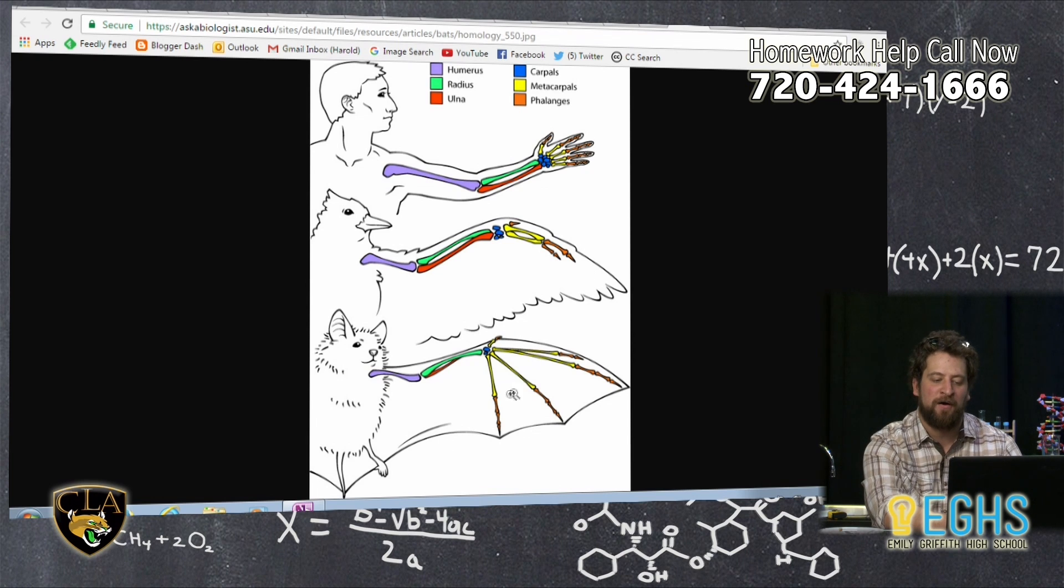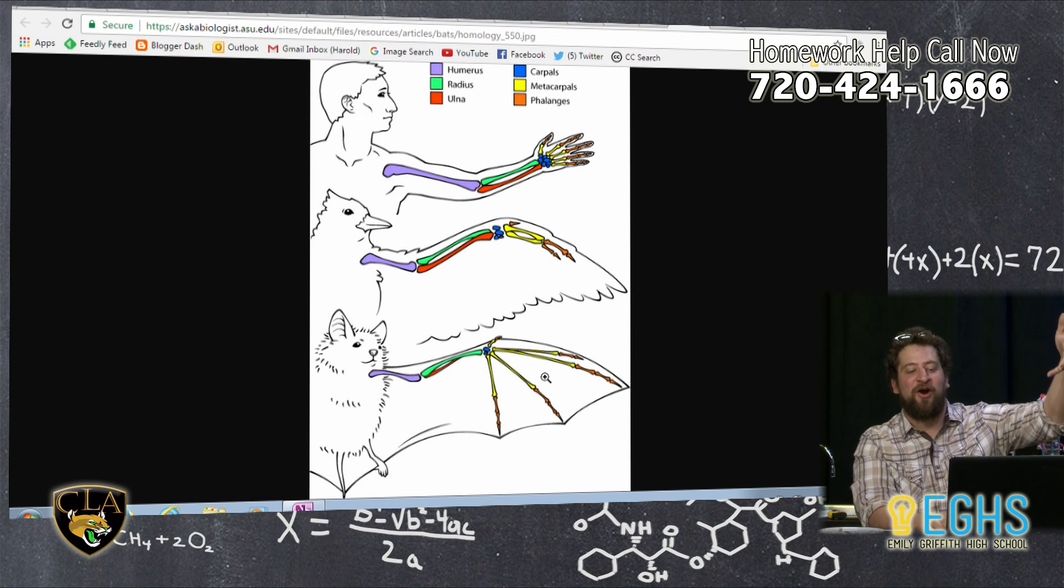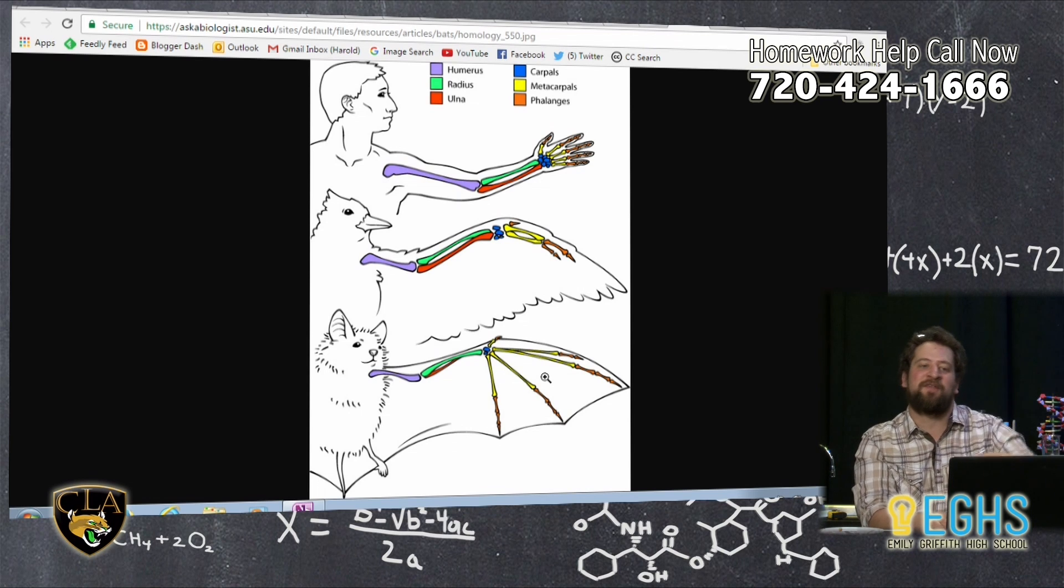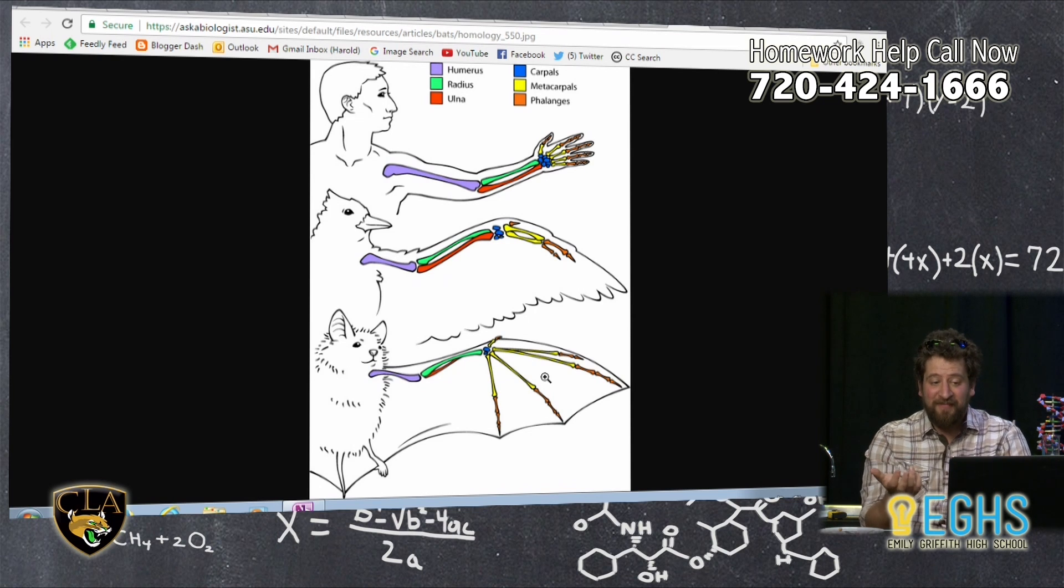But if we look at the bat arm, or the bat hand excuse me, you can see the phalanges of the bat hand are much more like a human hand. And of course the phalanges are much longer, and we can maybe even see the carpals are more compressed, but even so.